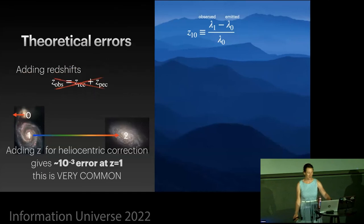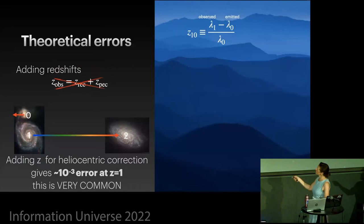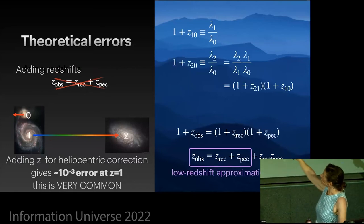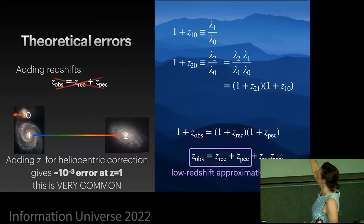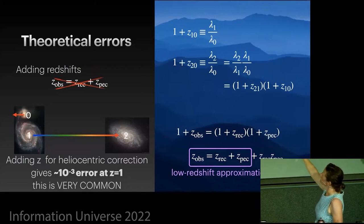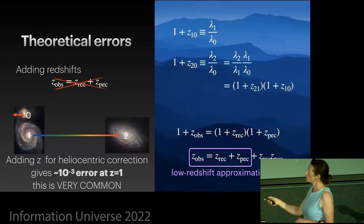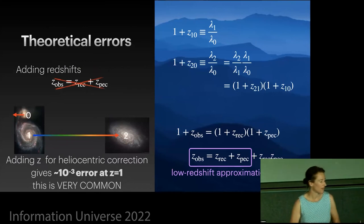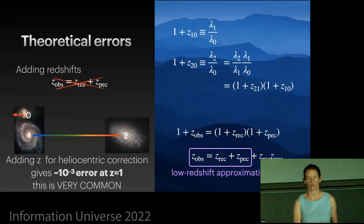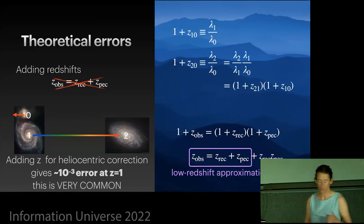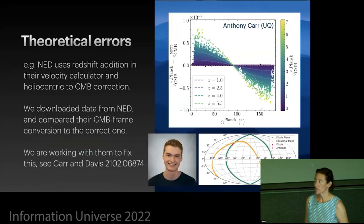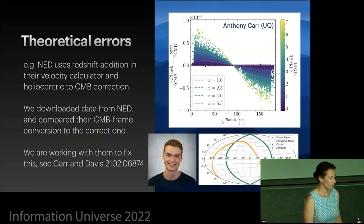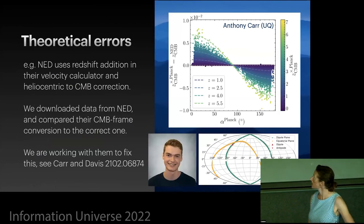I'm going to rapid fire through a few others. One of the theoretical errors that I mentioned is if you add velocity redshifts like this, the way that we define redshift is as this, and I'll flash through the derivation. The actual true relationship between the observed redshift and your recession velocity redshift and your peculiar velocity redshift should be this. So if you use this as a low redshift approximation, you're missing a term that's the recession redshift times the peculiar redshift, which gives you a 10 to the minus... If you do the heliocentric correction using the additive redshifts, you get a 10 to the minus three error at redshift of one. Now that's not important for H naught because we don't care about the high redshift errors. And this is a very small error at low redshifts. And so that this doesn't actually impact H naught, but it is very common. And if you've ever used the NASA extragalactic database and calculated CMB redshifts from this, it has this error in it. And we're trying to work with them to get them to fix that. And so Anthony Carr has been looking at this.